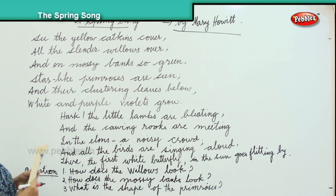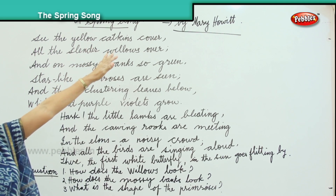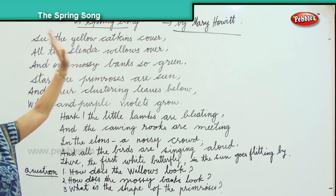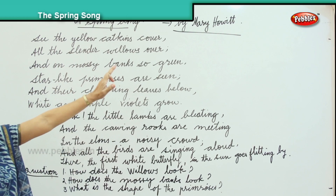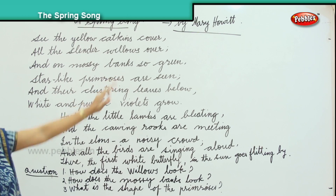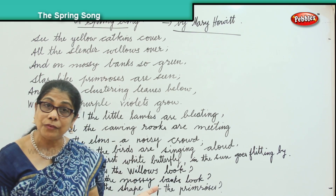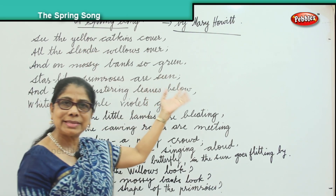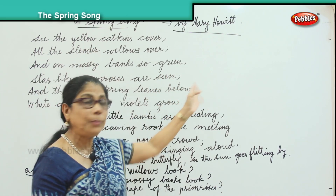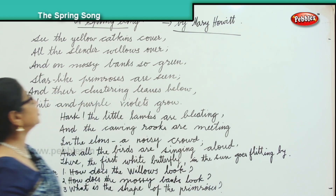Now, what covers? Catkins are covering. What is the colour of the catkins? Catkins are yellow. This is a little poem — The Spring Song by Mary Howitt. What is the title of the poem? The Spring Song. Who wrote this poem? This tiny little poem was written by Mary Howitt.